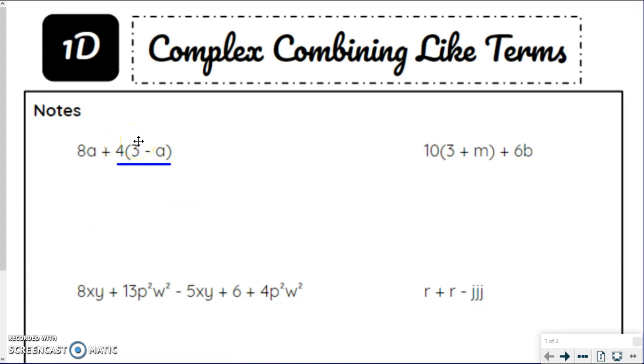4 times 3 gives us 12, bring that minus with us, and then 4 times a gives us 4a. So now here's my expression, 8a plus 12 minus 4a. So I did that distributive first and just brought that 8a along with me, keeping all the symbols the same.